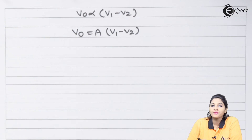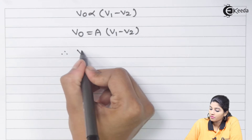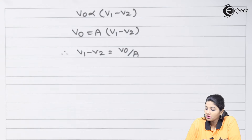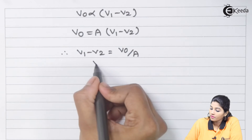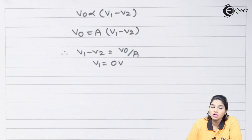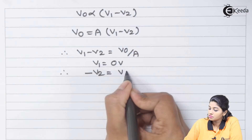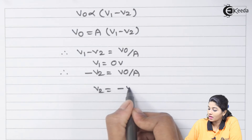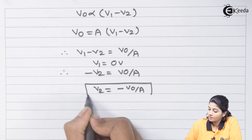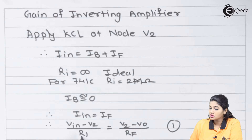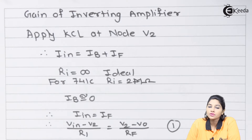Rearranging, V1 minus V2 equals V_o divided by A. In the circuit, the non-inverting terminal V1 is connected to ground, so V1 equals zero volts. Substituting into the equation gives minus V2 equals V_o divided by A, so V2 equals minus V_o divided by A. We call this equation number two.